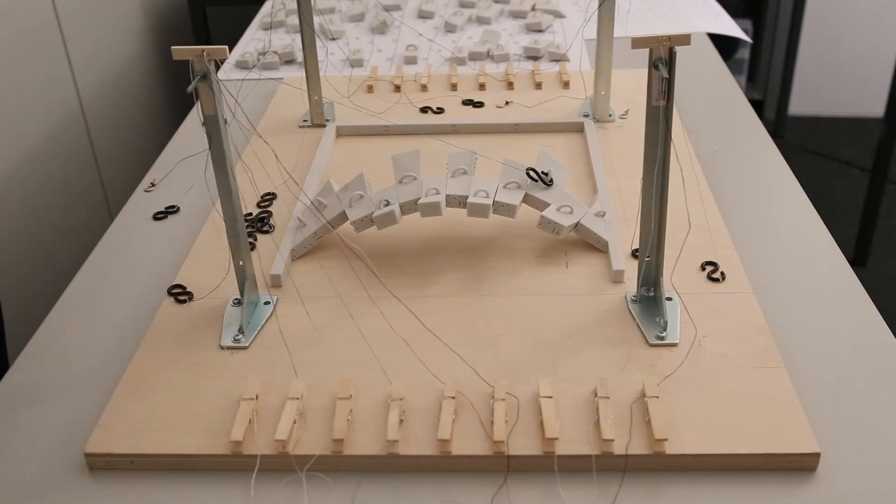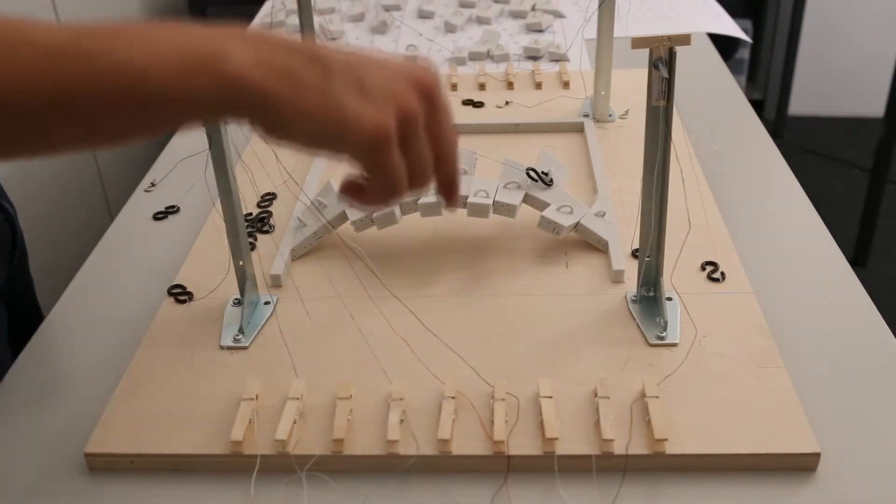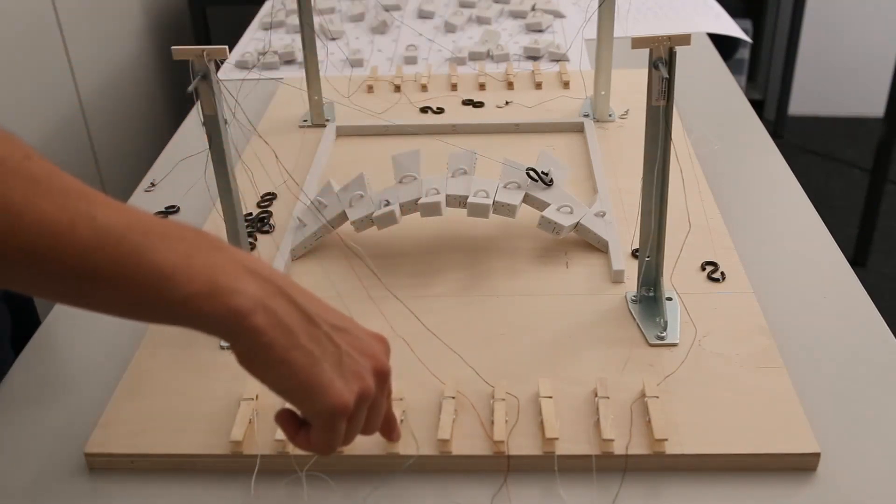This arc is a good example. It stands using a single chain, as predicted by our algorithm, but when the chain is released, a torque failure collapses the arc.